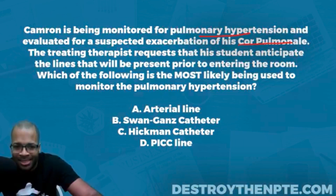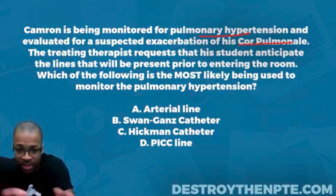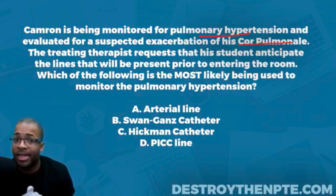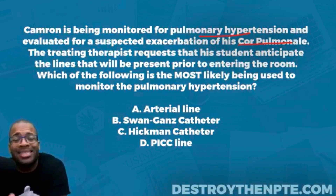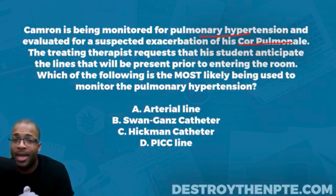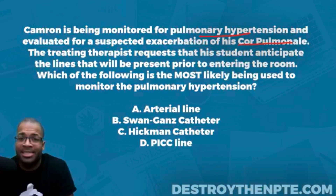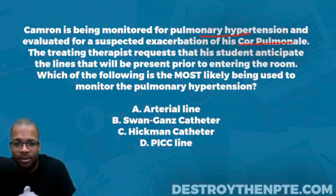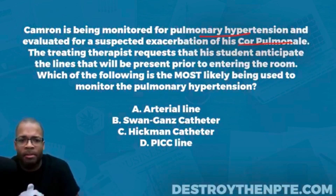If there is any backup of fluid or decrease in diameter of the artery wall, that creates pulmonary hypertension. The patient also has suspected exacerbation of his cor pulmonale. You need to know that cor pulmonale is another name for right-sided congestive heart failure. Congestive heart failure is the inability of the heart to meet the demands of the body — supply does not equal demand.